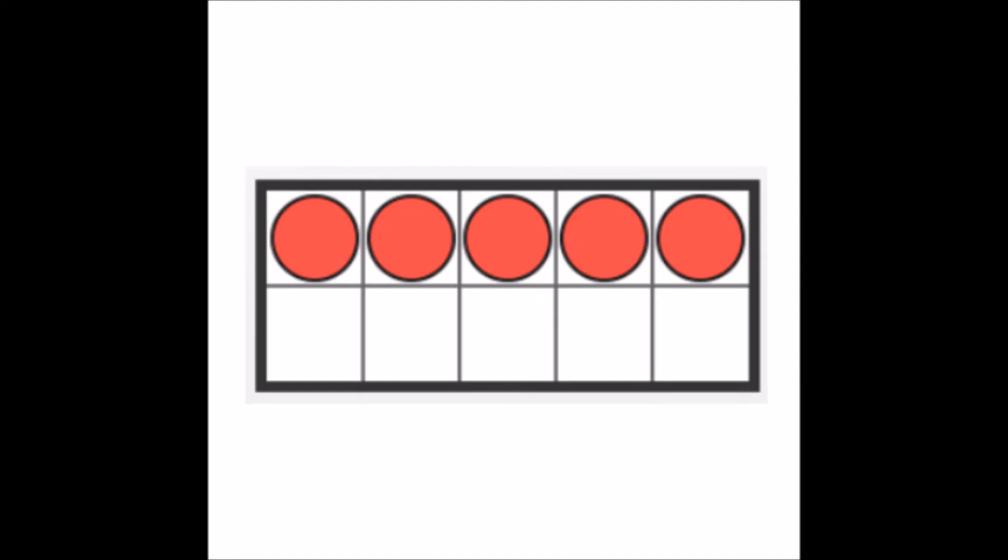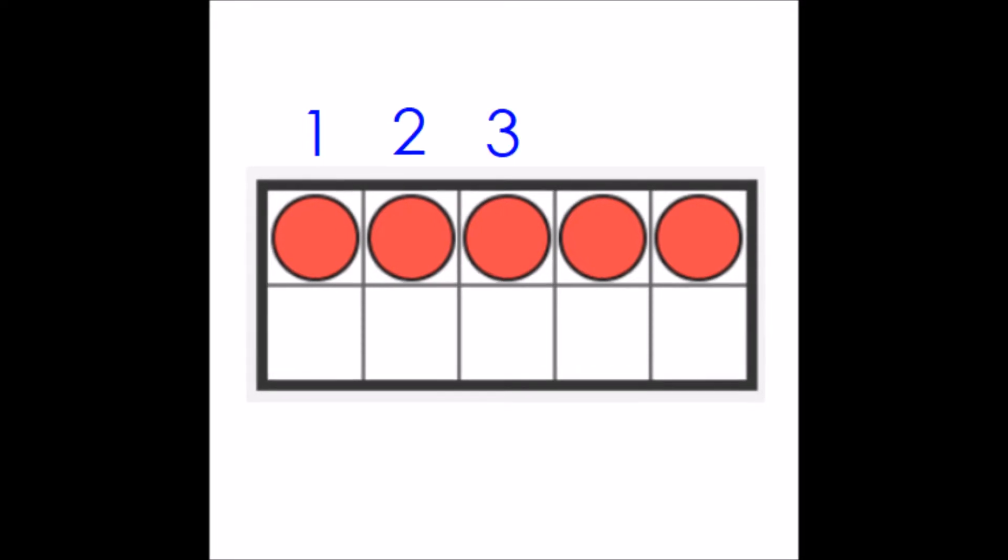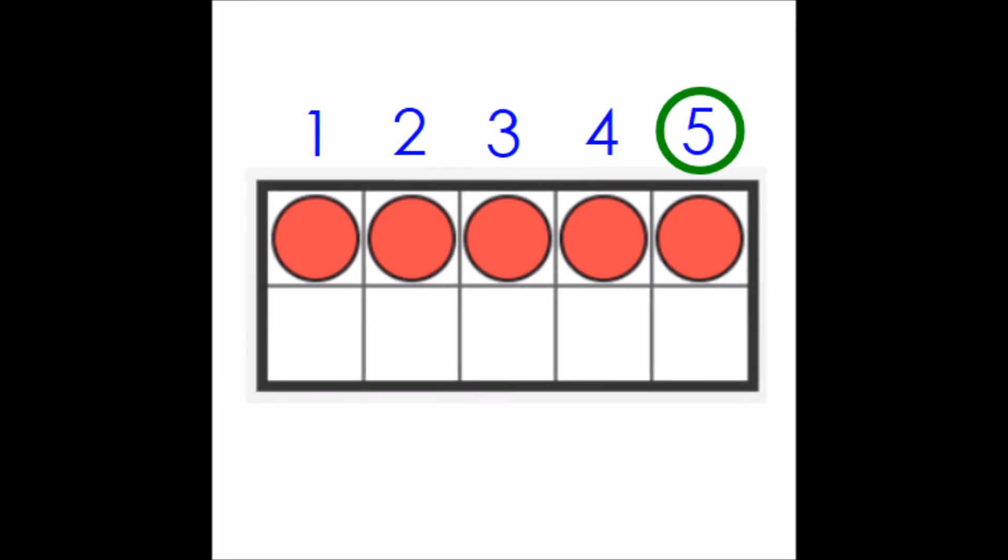All right, let's do the smallest number. So my top row is full. It does not say that I have to fill my other row at all. It just says one row of the frame is full and one is not. So in my mind, the smallest number I can make is just with that top row full and none of the bottom row full. So that number would be, let's see, one, two, three, four, five. The smallest number we can make is five.